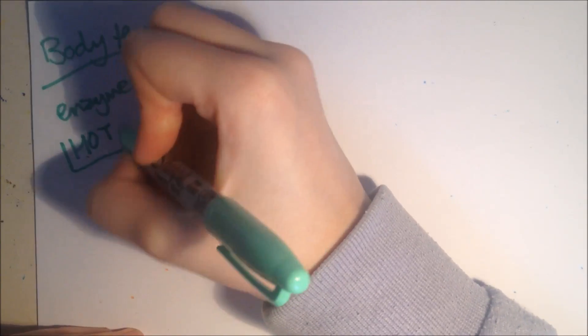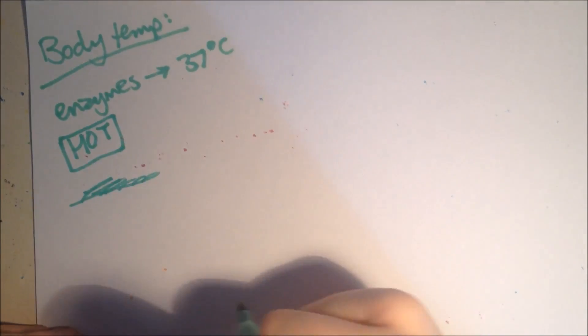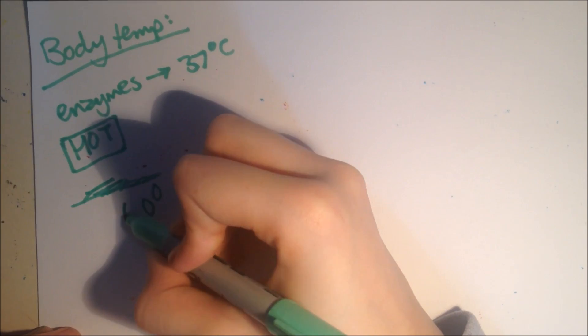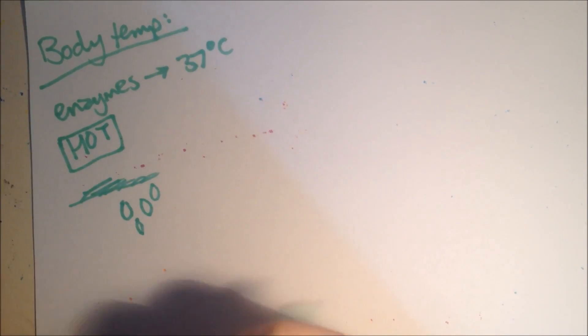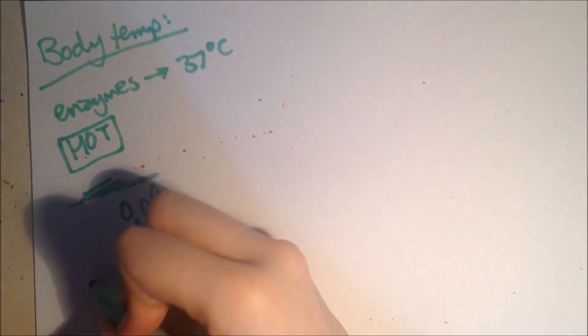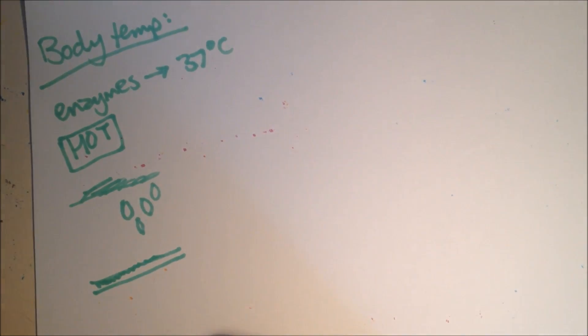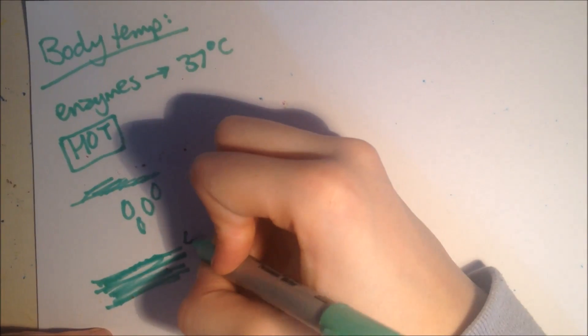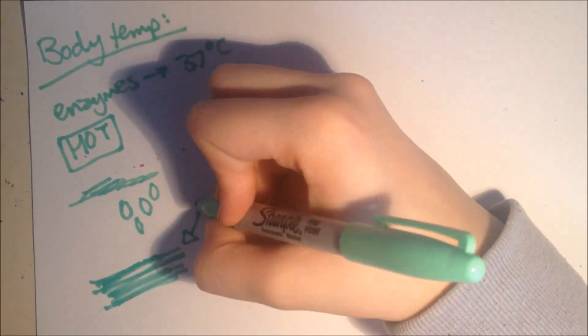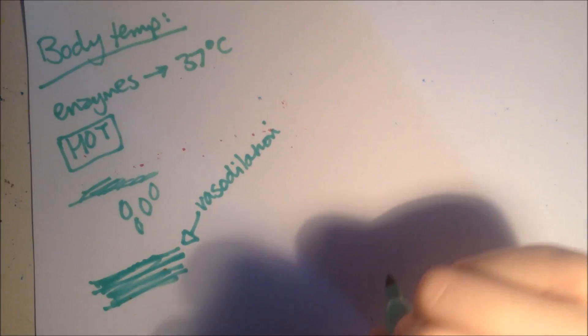For example, when you're too hot, the hairs lie flat. There's some hairs lying flat. Lots of sweat is produced. This is because, when it evaporates, it uses heat from the skin, which transfers heat from the skin to the environment, which cools you down. And then, here is the surface, and the blood vessels stay close to the surface, and also widen, which allows more blood to flow near the surface. Much more blood. Which can radiate more heat into the surroundings. And this is called vasodilation.